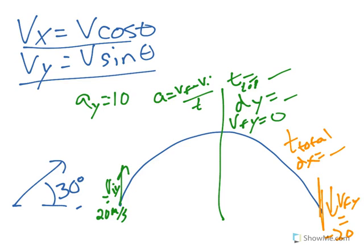So if you can find the time total, that'll give you the distance in the x. We use the same formula, a = vf - vi over t to find that time. And in this case, you would do a = negative 20 minus 20 over t. Remember, ay is still negative 10.